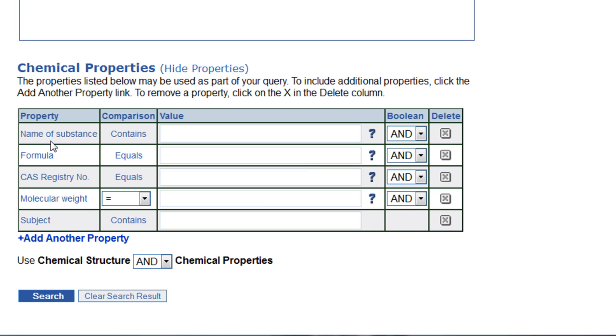In the leftmost column, there's a list of properties to choose from. These include the name of the substance, its chemical formula, and its Chemical Abstract Service or CAS registry number.